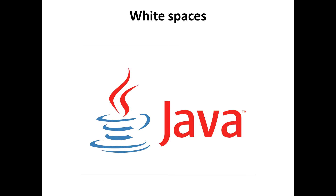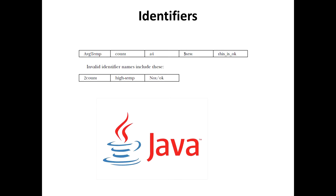Identifiers are used to name things such as classes, variables, and methods. Whatever naming you do in Java comes under identifiers. An identifier may be any descriptive sequence of uppercase and lowercase letters, numbers, or the underscore and dollar sign characters.